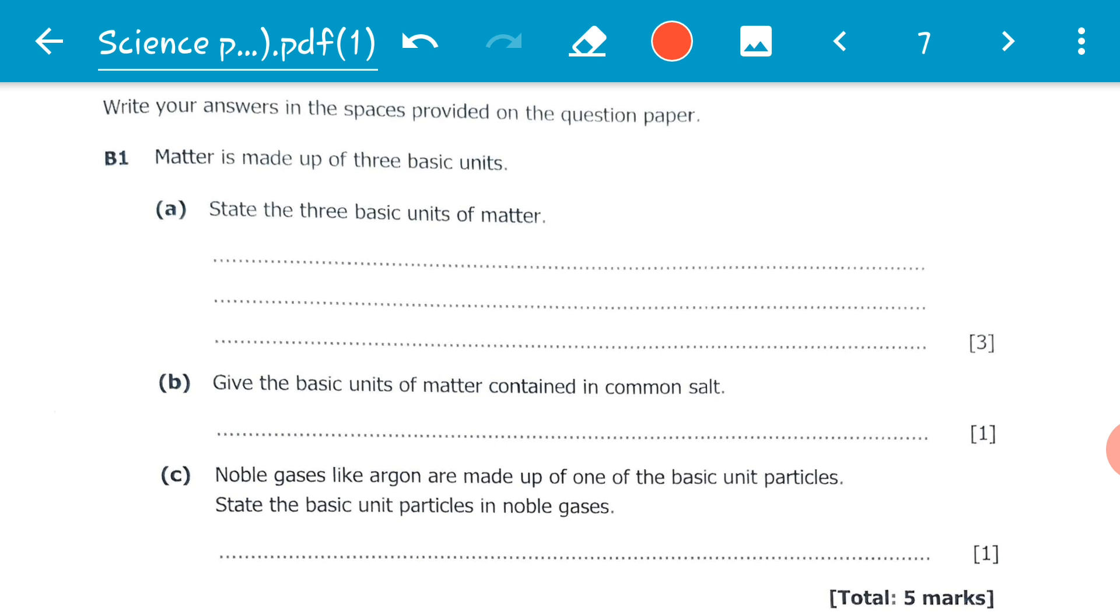Atoms. Atoms are a basic unit of matter. Two: when these atoms lose electrons or gain electrons, they form what is called ions - charged particles. Ions are also a basic unit of matter. The third one is molecules. When these atoms combine, they form molecules, and molecules only exist for covalently bonded substances. So we have three: atoms, ions, and molecules.